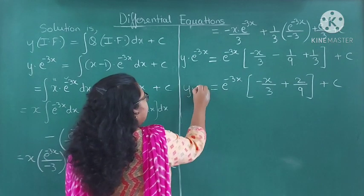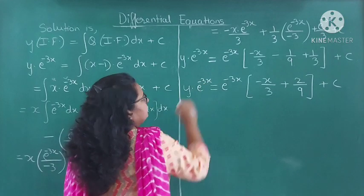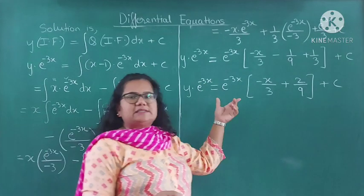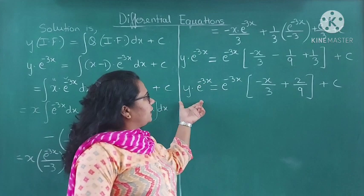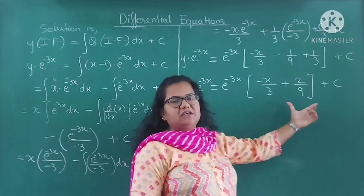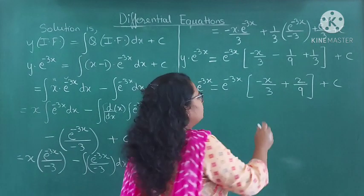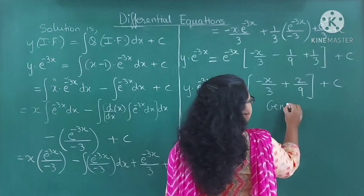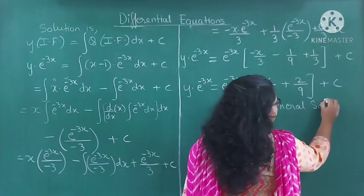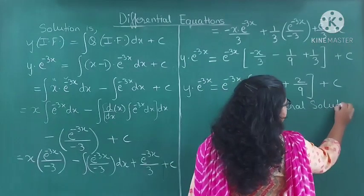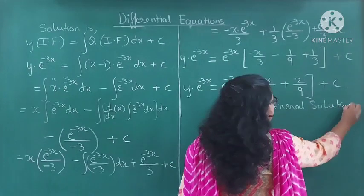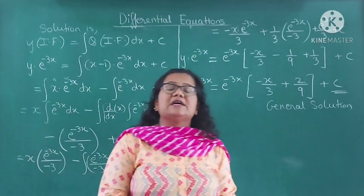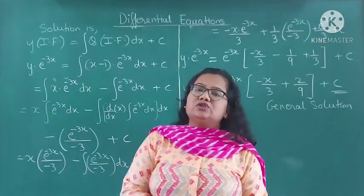So y into e raised to minus 3x equals e raised to minus 3x into (minus x upon 3 plus 2 upon 9) plus C. After simplification we get this equation. This is the general solution — when a constant term C is present, it is called the general solution.